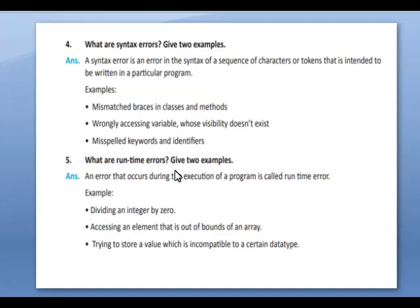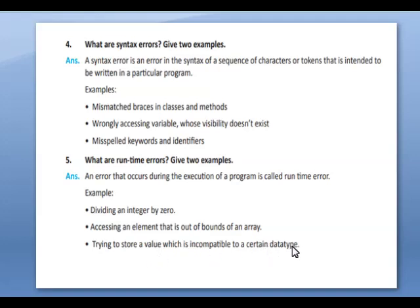What are runtime errors? Give two examples. An error that occurs during the execution of a program is called a runtime error. Examples: dividing an integer by zero; accessing an element that is out of bounds of an array; trying to store a value which is incompatible with a certain data type.